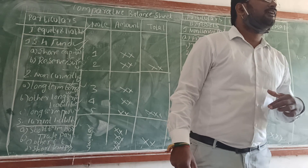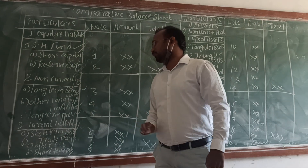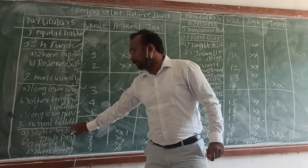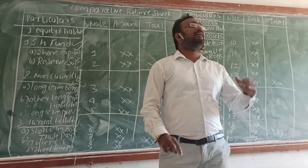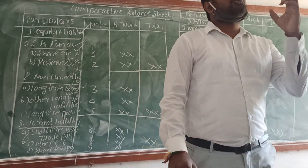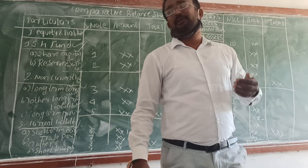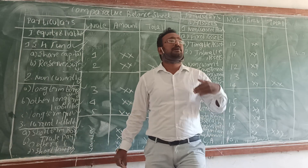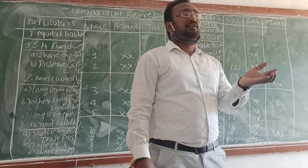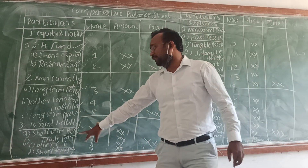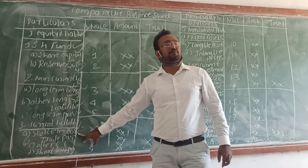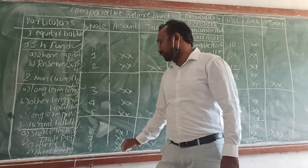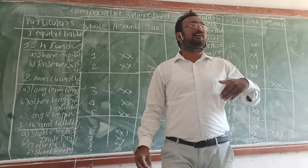The next current liability is trade payable. This is very important. In the case of trade payable, we usually take two liabilities: one is creditors and another is bills payable. Both are called trade payable. So creditors and bills payable together are called trade payable. We also have other current liabilities.